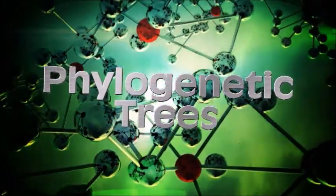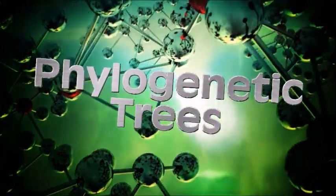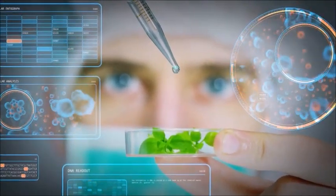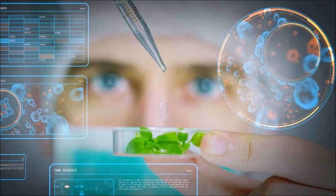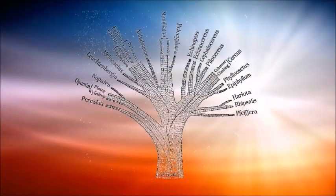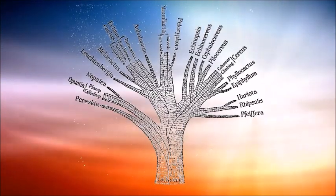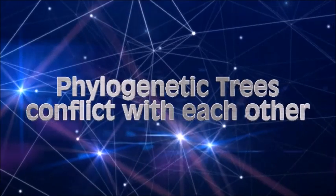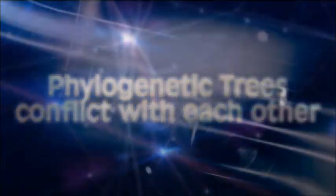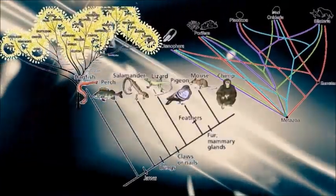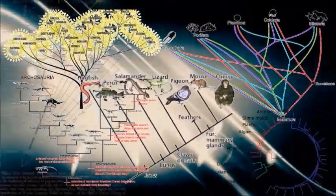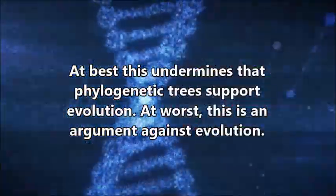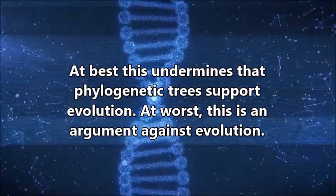Some argue for common descent based on phylogenetic trees. Phylogenetic trees attempt to compare different species' similarities among themselves to determine how closely related they are. An evolutionary tree is then constructed based on these similarities, which purportedly demonstrates how closely related the various species are to each other. The basic problem with this argument is that phylogenetic trees conflict with each other based on which similarity the tree is based on. Trees based on similar nucleotide sequences contradict trees based on similar molecules, which contradict trees based on similar morphology. At best this undermines that phylogenetic trees can be used to support evolution, and at worst it's an argument against it.